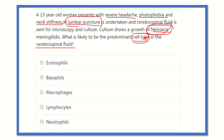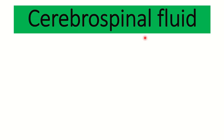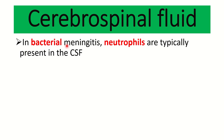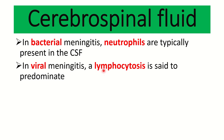In case of bacterial meningitis, neutrophils are typically present in the cerebrospinal fluid — this point is very important. In case of viral meningitis, lymphocytosis is the predominant finding; that means lymphocytes are more in viral meningitis and neutrophils are more in bacterial meningitis. These two points are very important, not only for this exam but for all types of exams.